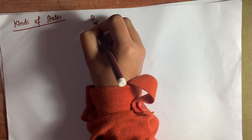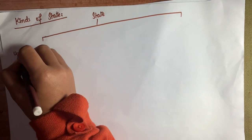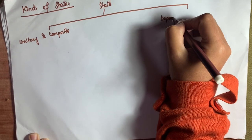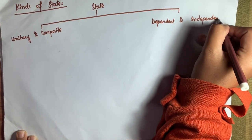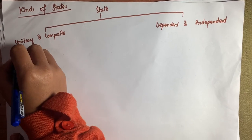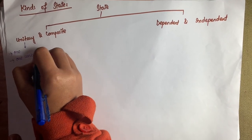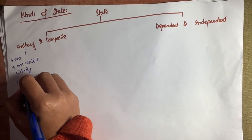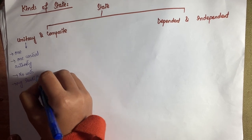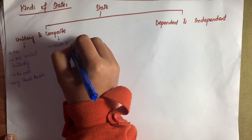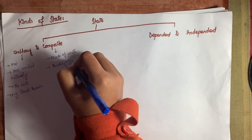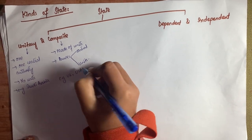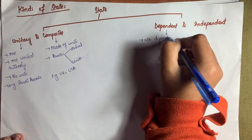Moving towards the kinds of state — the last topic. There are two main kinds of state: unitary and composite state, and dependent and independent state. First, unitary state means the main power of state is vested in one central authority. These states are not made up of units because they are a single-unit state — for example, Arab states are unitary states. Composite state, on the other hand, is comprised of various parts divided between the center and units — for example, the UK and USA.